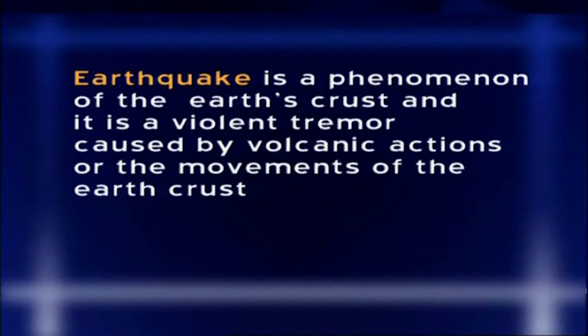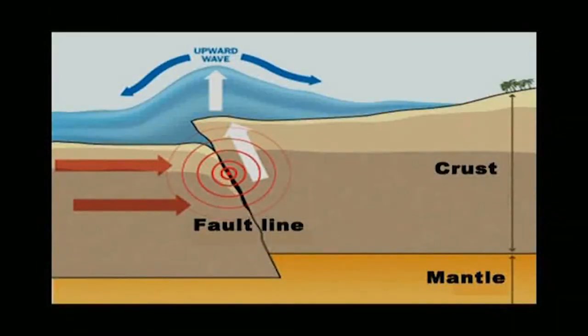Earthquake is a phenomenon of the earth's crust — a violent tremor caused by volcanic actions or movements of the earth's crust. An earthquake is a major manifestation of tectonic forces caused by endogenetic thermal conditions of the interior of the earth. It is a form of energy wave motion transmitted to the surface layer of the earth in widening circles from a point of sudden energy release, also known as the focus.